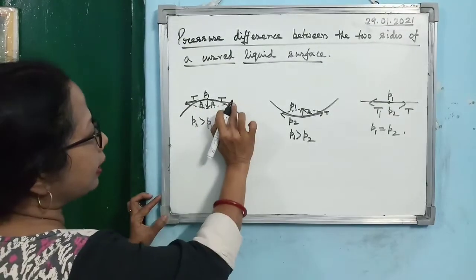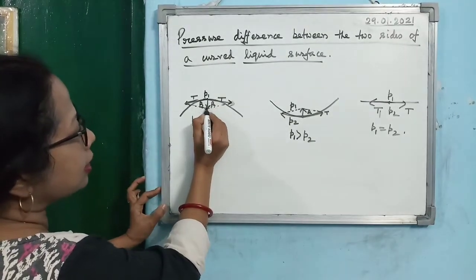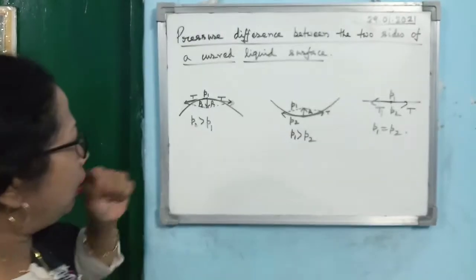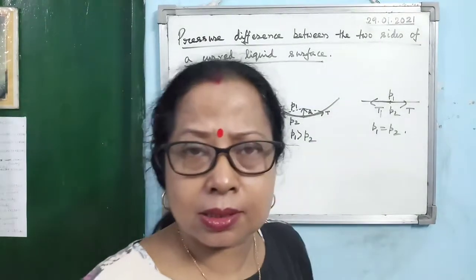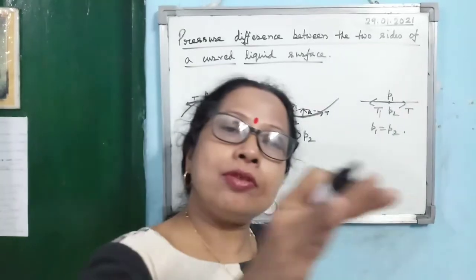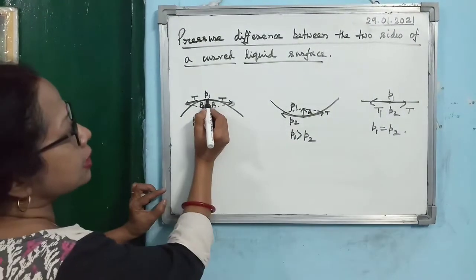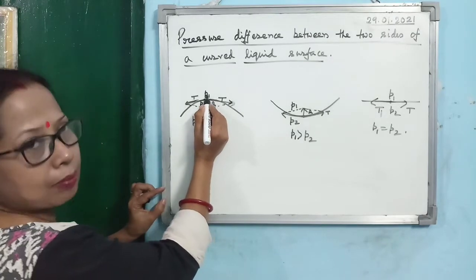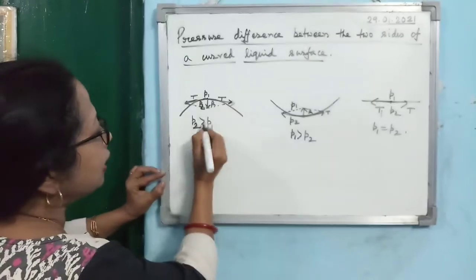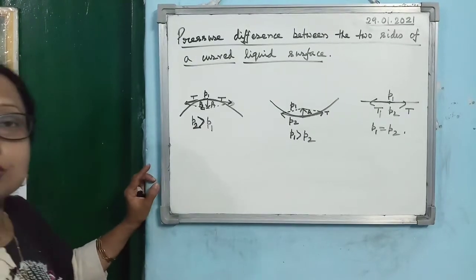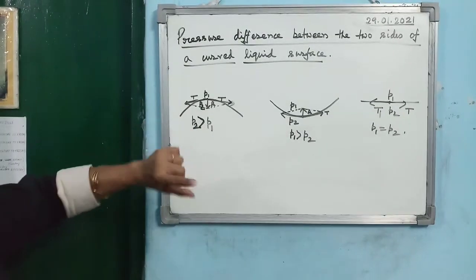If you complete the parallelogram, you see the resultant force is acting in the downward direction. Under the action of this resultant force, the liquid molecule should come down, but that never happens. When the liquid meniscus is convex upward, it never gets flat because if the pressure just above the liquid meniscus is P1 and just below is P2, then P2 is greater than P1 — excess pressure always acts on the curved surface of the liquid.